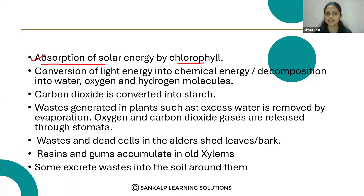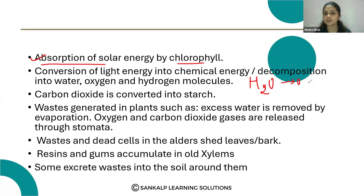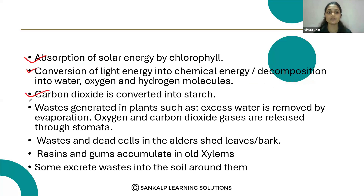The second step is conversion of light energy into chemical energy, or the decomposition of water into oxygen and hydrogen molecules — the breakdown of water molecules forms oxygen and hydrogen. The third step is conversion of carbon dioxide into starch. These are the three main events of photosynthesis.